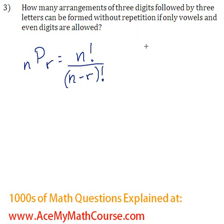Ok, so we want three digits followed by three letters and we are only allowing vowels so A, E, I, O, U.